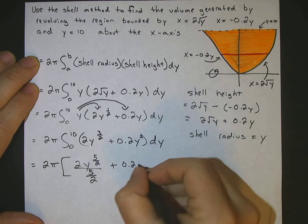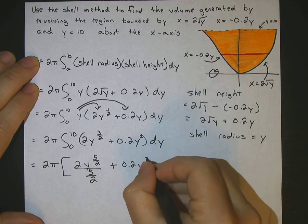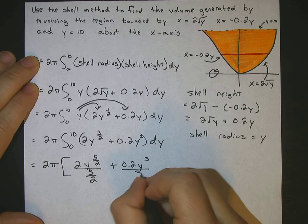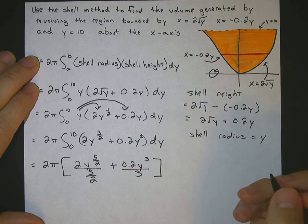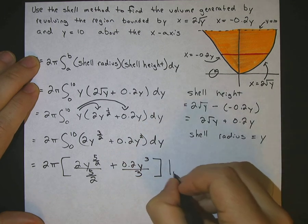Good, so we fixed the mistake. We've got y to the added power. So it's 3 divided by 3. Okay, and we're integrating from 0 to 10.